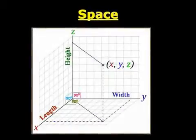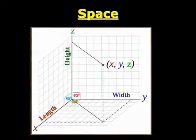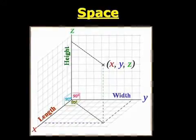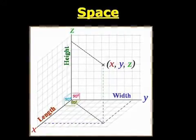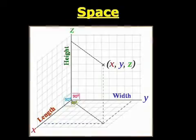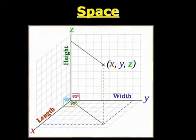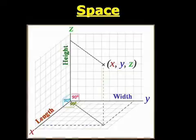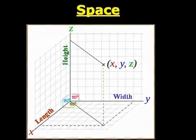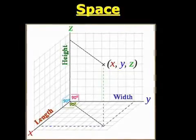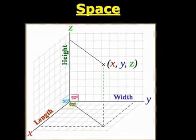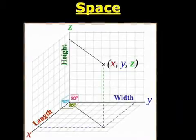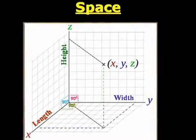Space can be understood using a maximum of three dimensions. We can call them length, width, and height. Please note the angle between each dimension is 90 degrees. Therefore, these dimensions are mutually exclusive to each other.